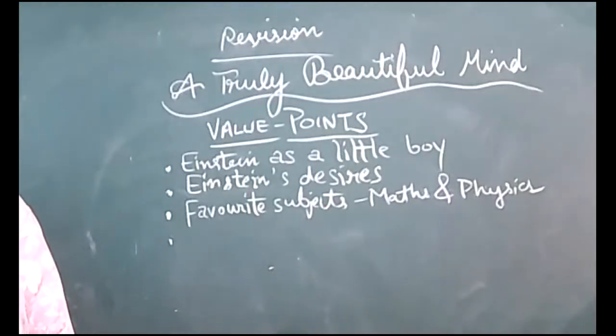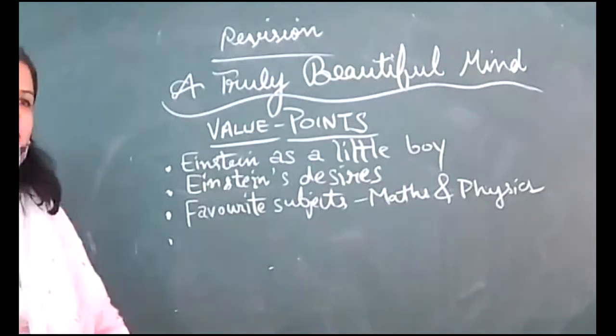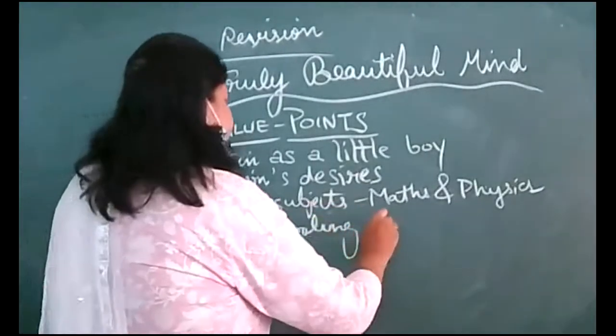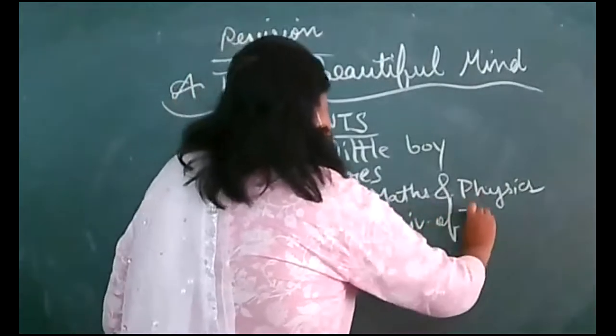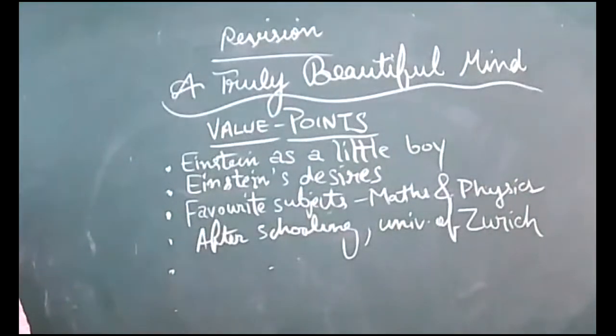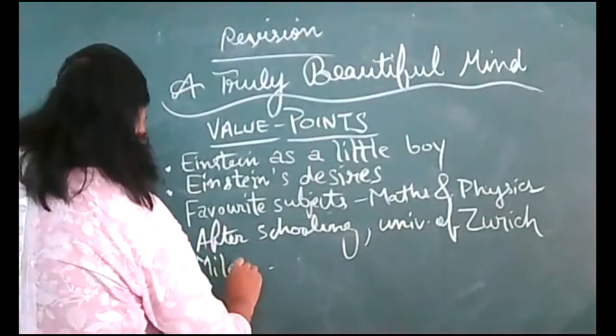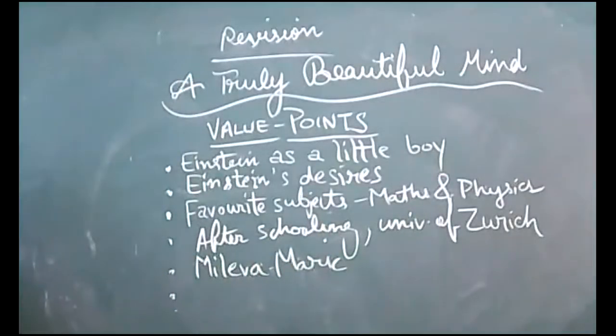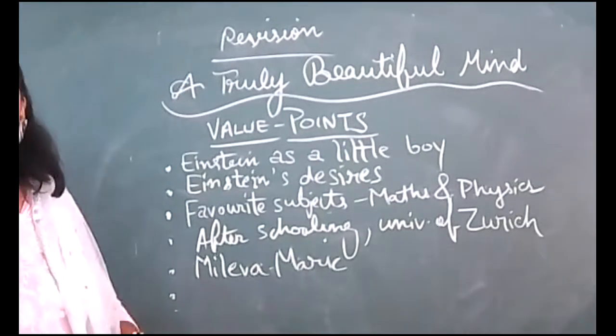His desire was to continue education in Switzerland. He was gifted in maths and physics. He decided to study at the University of Zurich after schooling. You should know which university—after schooling, University of Zurich. Then he found his fellow student Mileva Maric, another character—M-I-L-E-V-A. He found this girl to be intelligent enough, who could match his IQ.